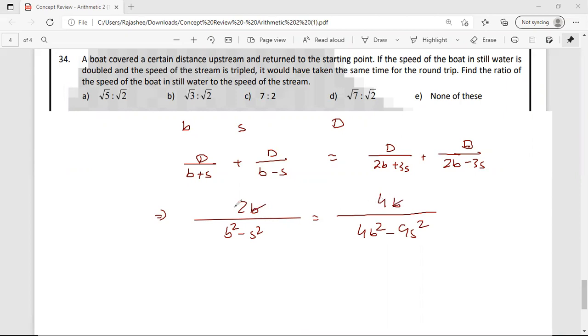So again, this B, B cancelled. 2 cancels with 4, 2 left. So 4B square minus 9S square is equal to 2B square minus 2S square.